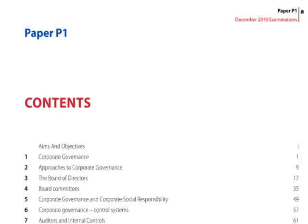Corporate governance became fashionable back in 1992 because of a number of high-profile corporate failures in the UK. The government asked Sir Adrian Cadbury to try and identify what was causing these failures. He came up in 1992 with his Cadbury Report, and since then a number of reports have been added on - things about directors, nominations, and how companies should operate. These now combine into what's called the Combined Code in the UK.